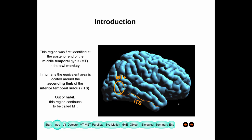MT was first identified in the owl monkey. In the owl monkey, it's located in the middle temporal gyrus, and that's where the name MT came from. Even though now it's not the middle temporal gyrus but the inferior temporal sulcus in humans, we still keep the monkey name for it. So that's where the somewhat odd symbol MT comes from.